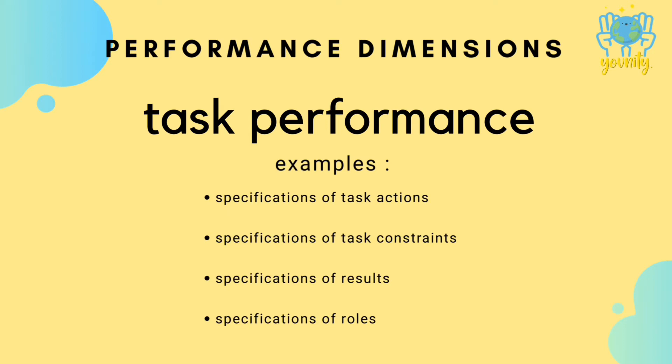Examples of task performance include specification of task actions — one of the crucial elements used to measure an employee's task performance, where employees must fulfill all the specifications of the task to accomplish it successfully. Specification of task constraints is used to check whether the quality of the task is maintained, and whether it is done within the task duration and given budget. Specification of results means whether the accomplished task matches what was required of it; the outcome of the task is measured against the requirements.